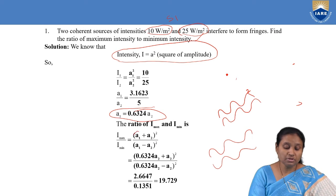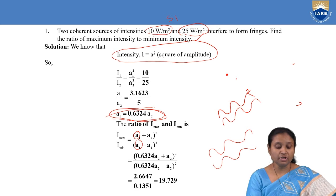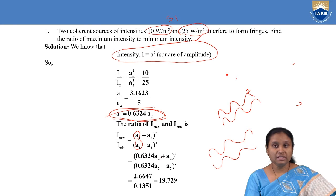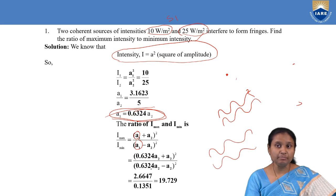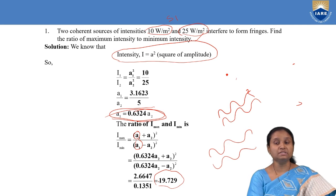We substitute A1 in terms of A2, where A1 equals 0.6324 times A2. When we substitute, A2 gets cancelled and if we simplify, our ratio of maximum intensity to minimum intensity comes out to be 19.729.